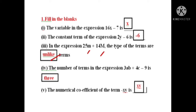The number of terms in the expression 3 into AB plus 4C minus 9. How many terms are there in total? 3 into AB is one term, next is 4C, and then minus 9. So altogether there are 3 terms.